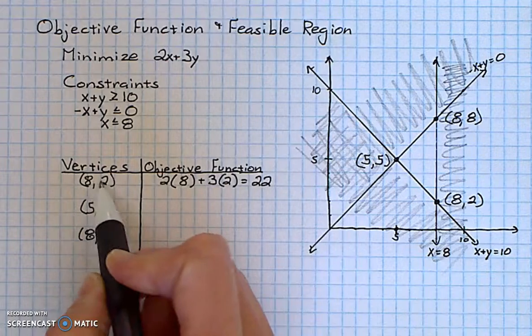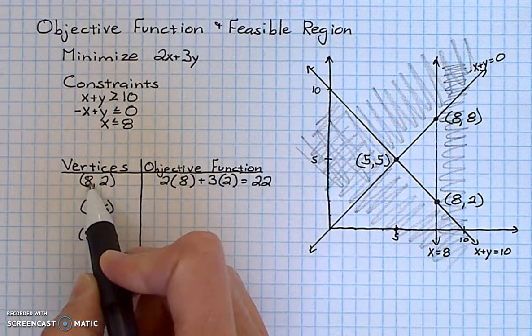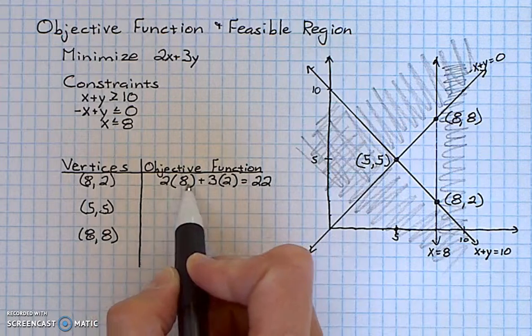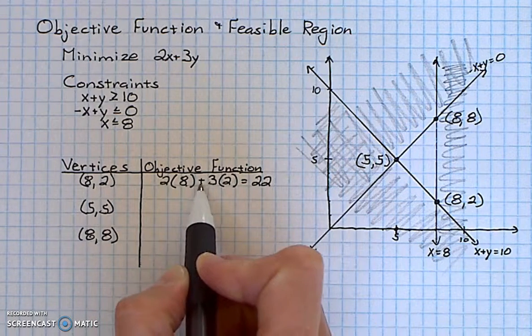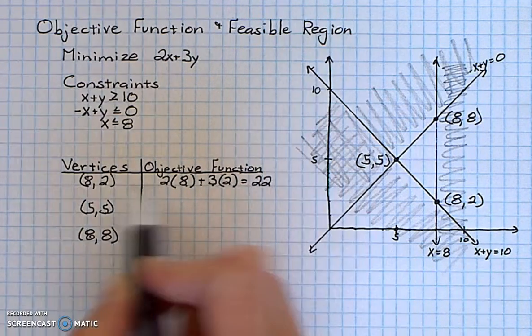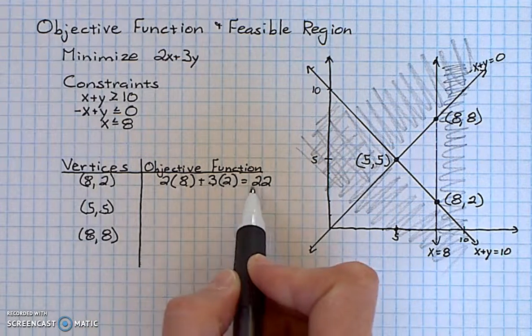So I take 8 as an x value, substitute it in: 2 times 8 plus 3 times the y value, which is 2. The result is 22.